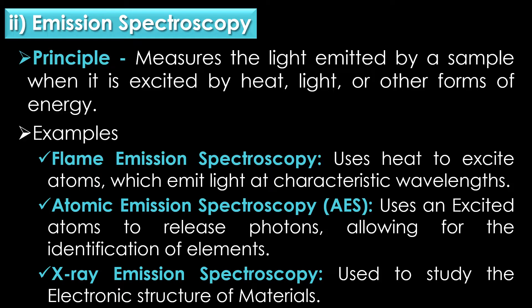The second type is emission spectroscopy. Emission spectroscopy measures the light emitted by a sample when it is excited by heat, light, or other forms of energy. Examples include flame emission spectroscopy, which uses heat to excite atoms that emit light at characteristic wavelengths; atomic emission spectroscopy, which uses excited atoms to release photons for element identification; and X-ray emission spectroscopy, used to study the electronic structure of materials.